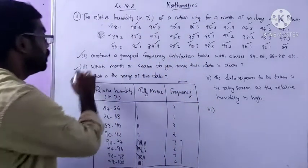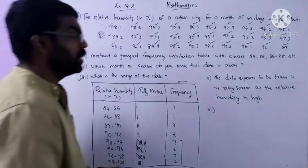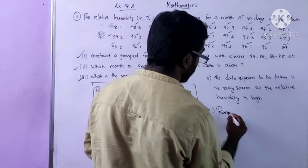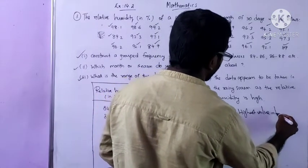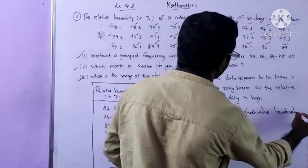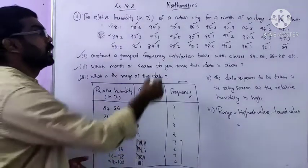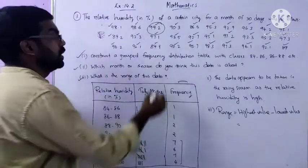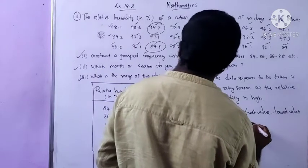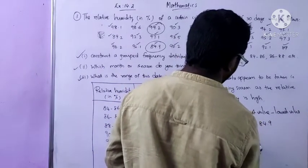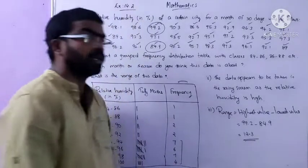The third part: what is the range of this data? Range means the highest observation minus the lowest observation. Here the highest value is 99.2 and the least value is 84.9. So we calculate 99.2 minus 84.9, which is equal to 14.3. So the range is 14.3.